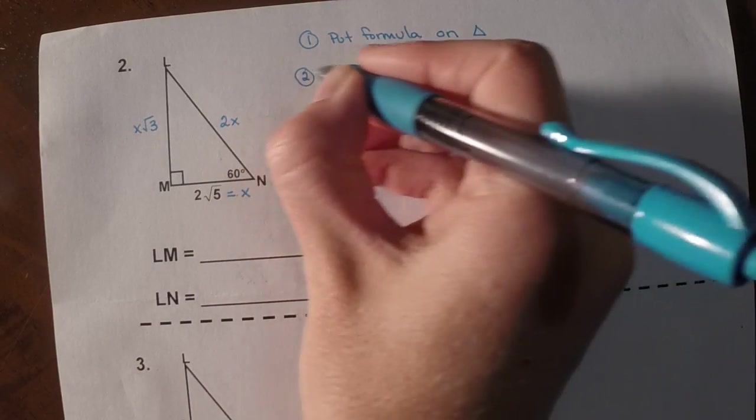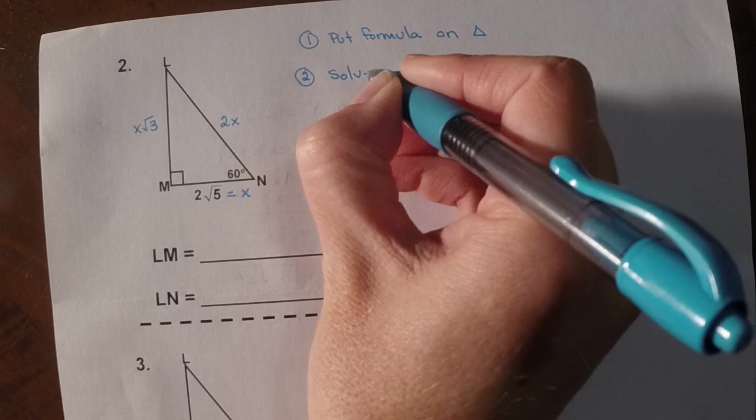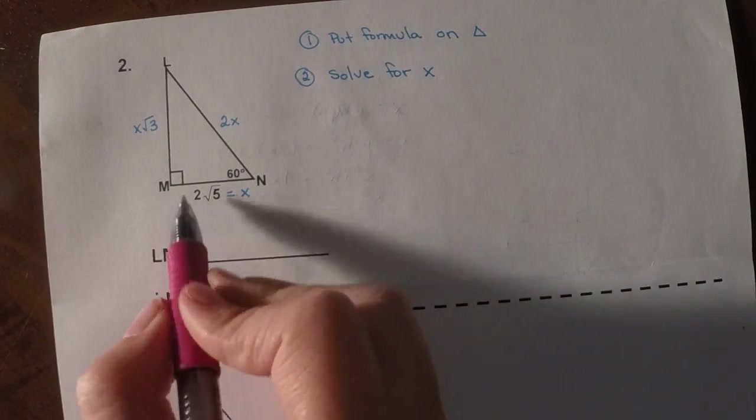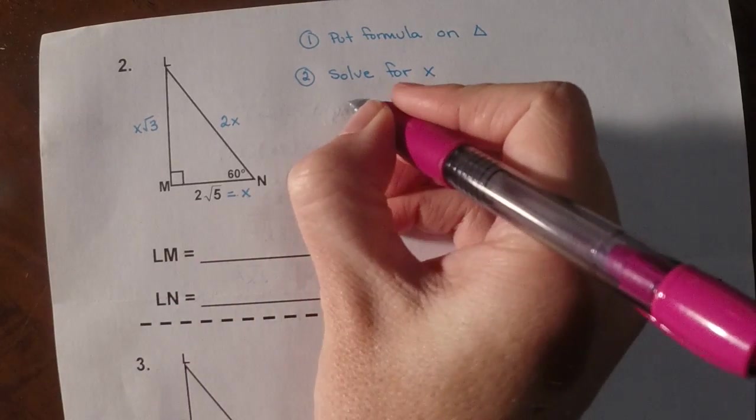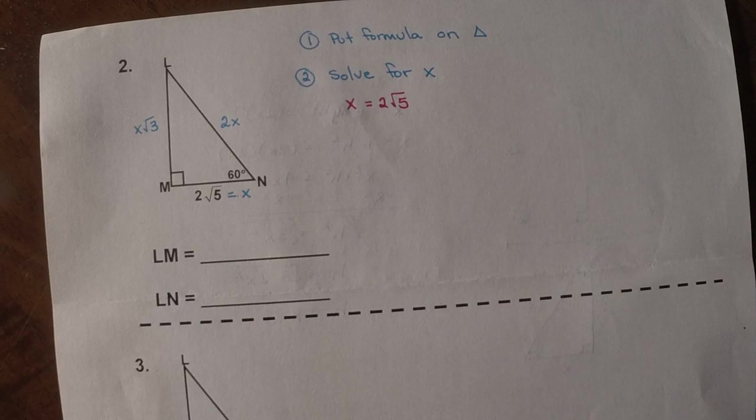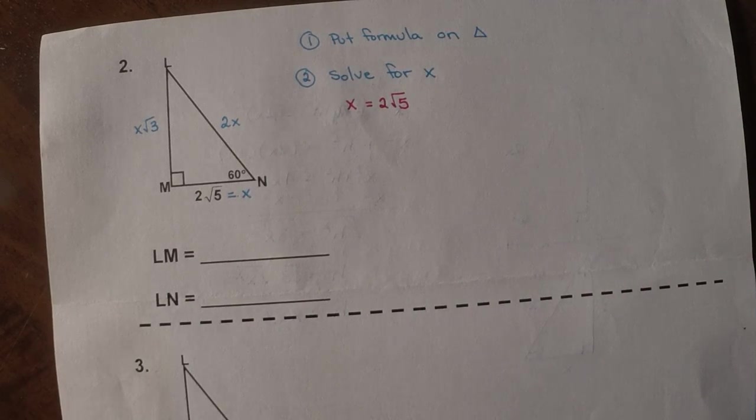So then step 2, this is where we have to figure out where we solve for x. Well, on our triangle, here's our setup to solve. I have x equals 2 root 5. Well, it's pretty easy to solve since x is already by itself. So there's our answer.